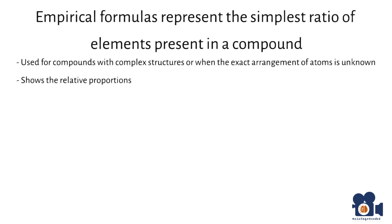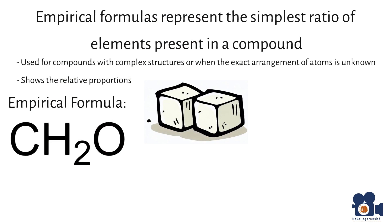For example, the empirical formula of glucose is CH2O, indicating for every carbon atom, C, there are two hydrogen atoms, H's, and one oxygen atom, O, in the compound.